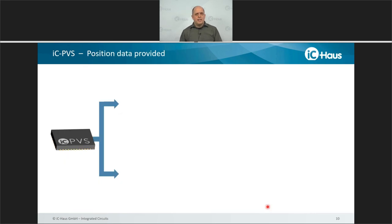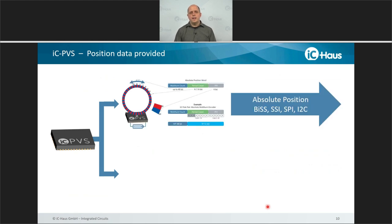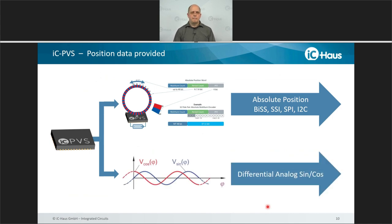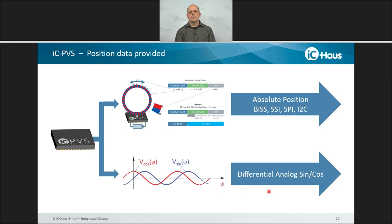Summarizing the position data provided by IC PVS: on one hand you have the absolute position available via the serial user interfaces of IC PVS. On the other hand, you have the differential sine-cosine signal representing the position within one magnetic period, available at the differential analog sine-cosine output. Keep this in mind because it's important to understand how IC PVS can be used with interpolators like the IC TW29.